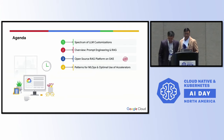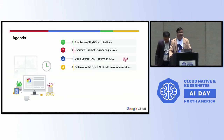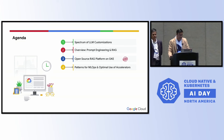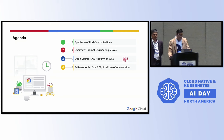We'll start with the agenda. We have a packed agenda — 25 minutes. We have a spectrum of LLM customizations. We'll be talking about prompt engineering and RAG, along with the RAG implementation on GKE with a demo. And last, we'll be talking about the patterns of MLOps and optimal use of accelerators.